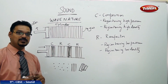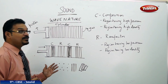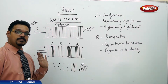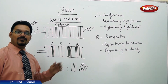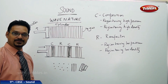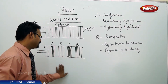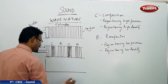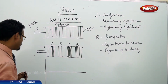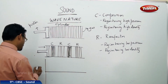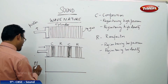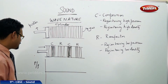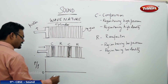Now, how do we show this graphically or in waveform? Take an x and y coordinate system. On the y-axis you can take pressure or density, and on the x-axis you can take time. So y-axis represents pressure or density, and x-axis represents time.